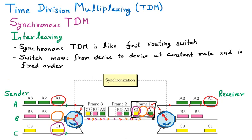Afterward, the switch moves and the turn of B comes. This particular frame is taken, B is extracted — which is a space — and that space is given to the receiver. Again, the switch moves to C, takes C1, and sends it to the C receiver line.